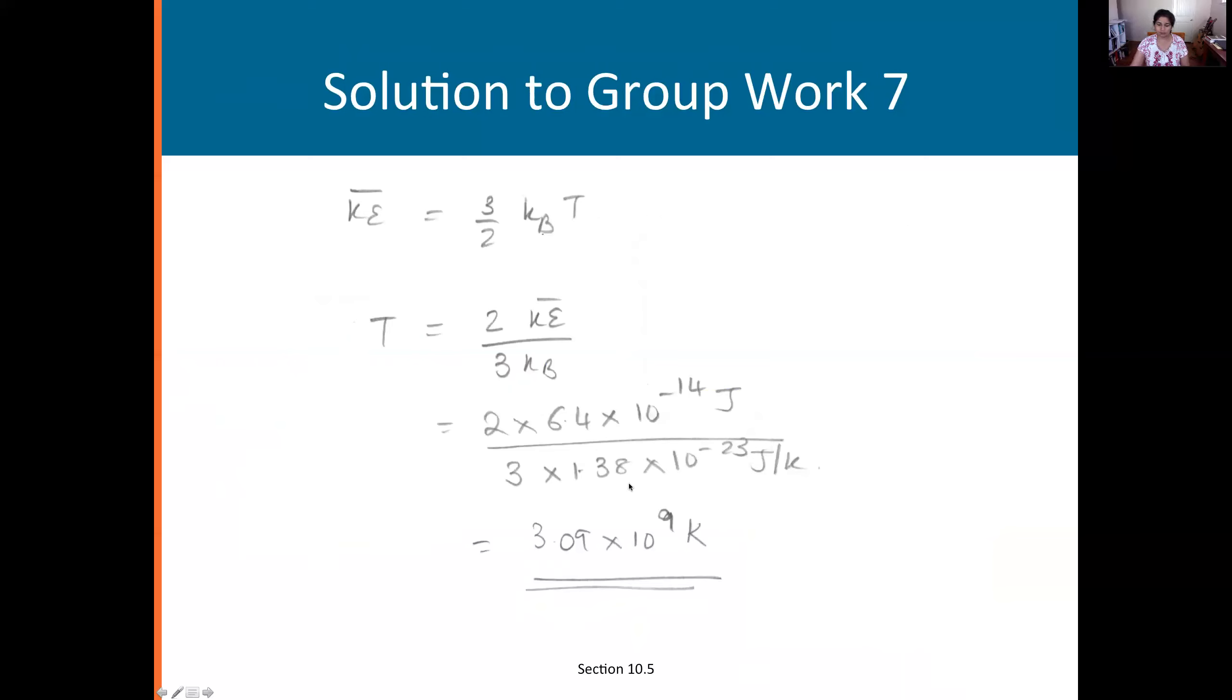So KB you will find is 1.38 times 10 to the minus 23 joules per Kelvin. When you put all that you will get a temperature of 3.09 times 10 to the power 9 Kelvin.